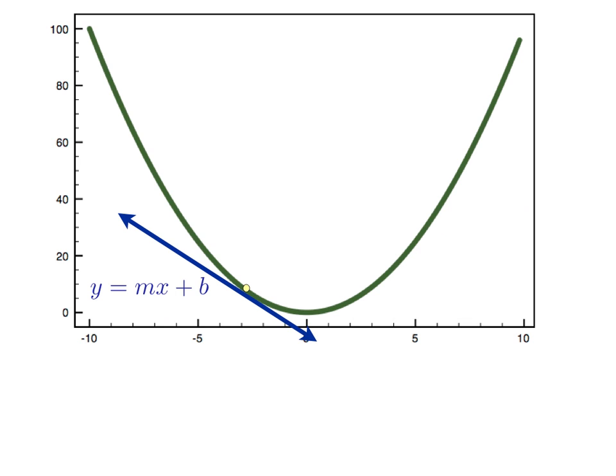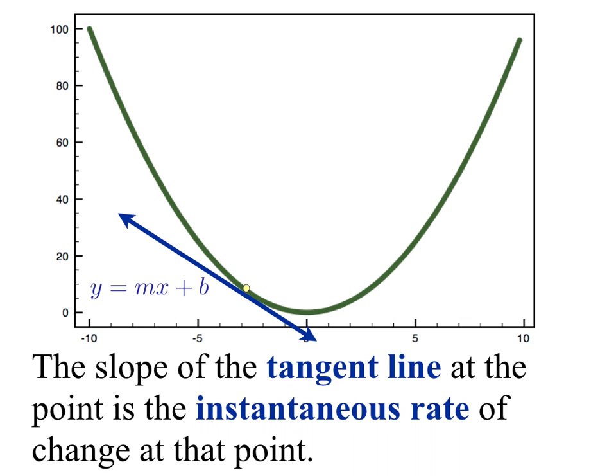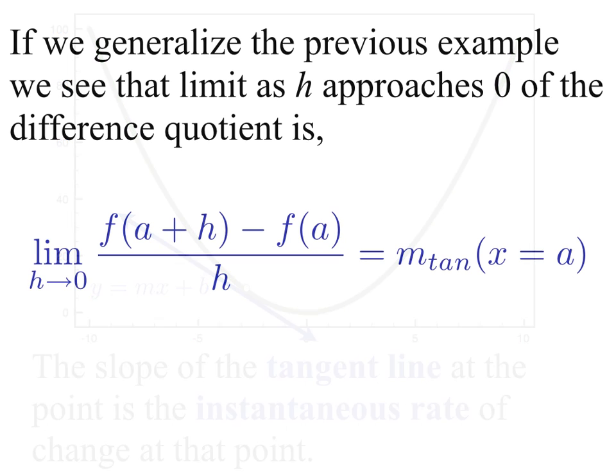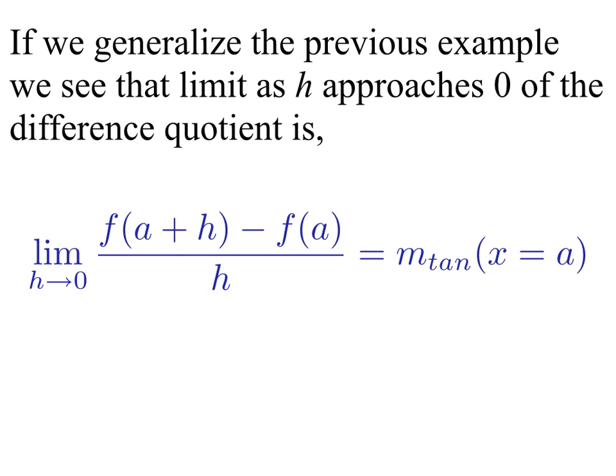We can think of the equation of the tangent line as y = mx + b. The slope of the tangent line at the point is referred to as the instantaneous rate of change at that point. So if we generalize the previous example, we see that we took the limit as h approaches zero of the difference quotient: the limit as h goes to zero of [f(a+h) - f(a)] / h is equal to the slope of the tangent line at the point x = a.